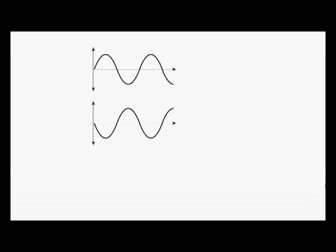If we contrast that with this situation — again two sine waves, but now the first one is heading up when the second one is heading down and vice versa — they're said to be out of phase. If we were to add these two sine waves together, if we're lucky we'd end up with a small sine wave; if we were very unlucky we'd end up with something that was just flat. We've added one plus one to get zero, and that's typically a bad thing in a grid tie situation.